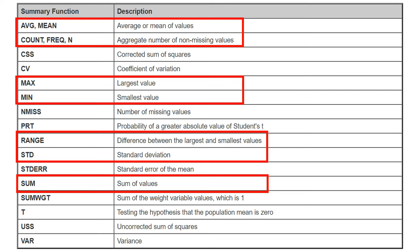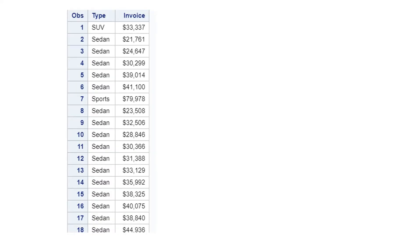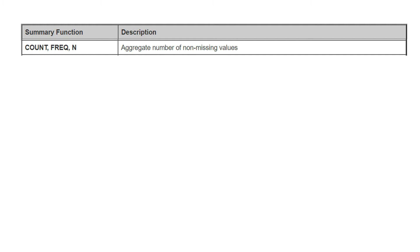Out of all these options, the functions most commonly used are these. The rest are quite statistical, which we will cover when we start statistical learning in SAS. To study these functions we will use two variables from the table CARS. The first summary function we are going to see is COUNT, FREQ, or N.